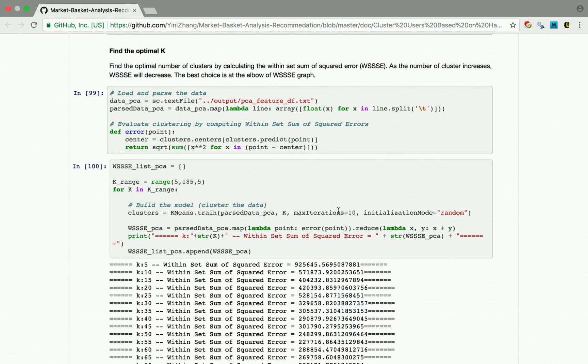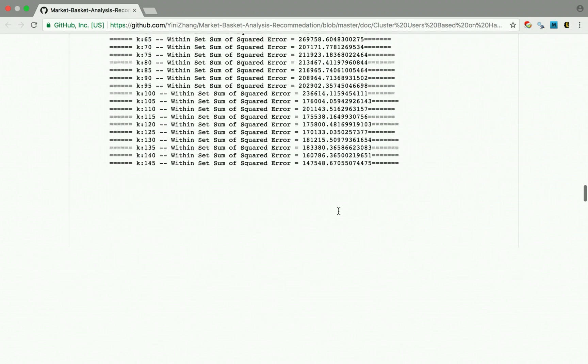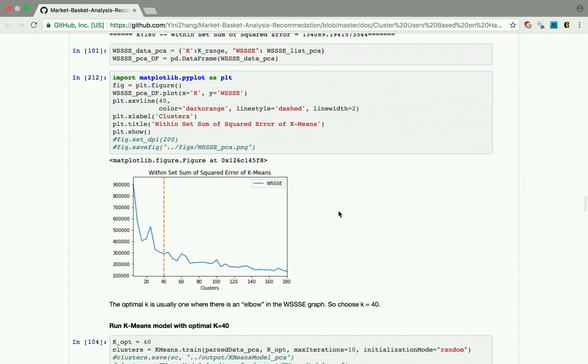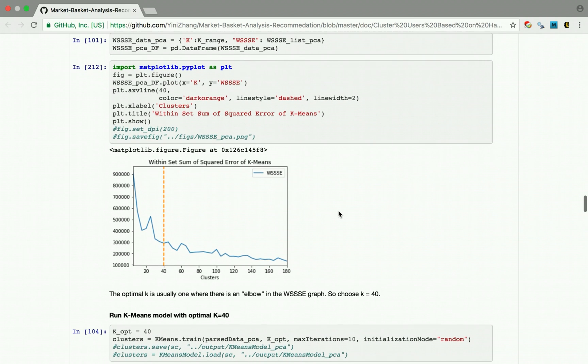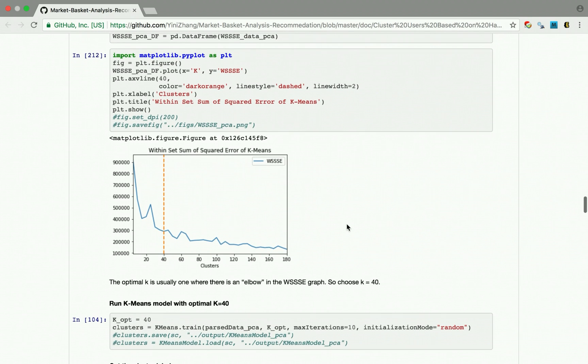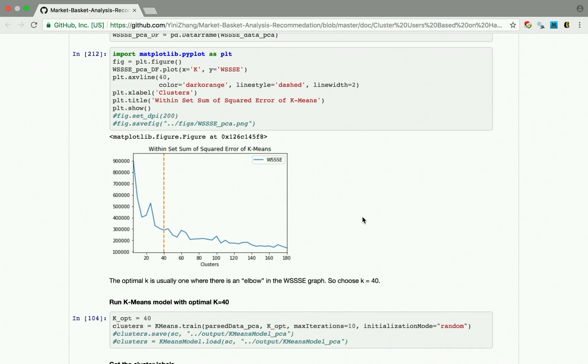But we need to find what is the optimal number of clusters. We draw this within set sum of square error plot. And we can see that as the cluster number increases, the sum actually decreases. We will use the elbow of this graph, which is k equals 40, to be the optimal number of clusters.